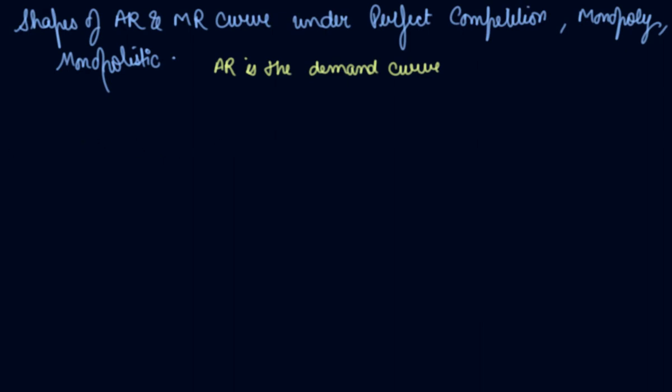So your demand curve in the case of perfect competition - I've told you many times that in perfect competition your firm is a price taker, so your AR is equal to the price. Your price remains constant, your AR is equal to MR.